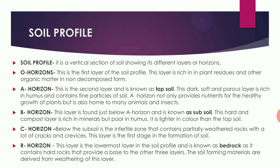Soil profile is the vertical section showing the different layers or horizons. The O horizon is the first layer, rich in plant residue and other organic matter in non-decomposed form. The A horizon is the second layer, known as topsoil. It is a dark, soft, porous layer rich in humus and contains fine particles of soil. It provides nutrients for plant growth and is also the home of animals and insects.